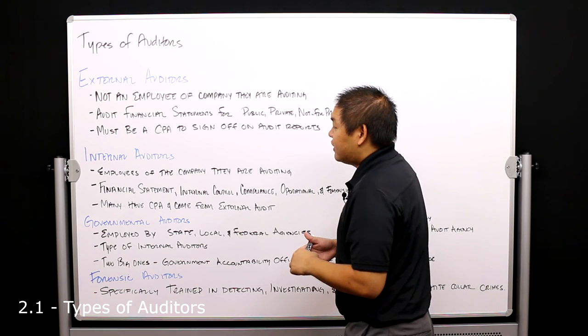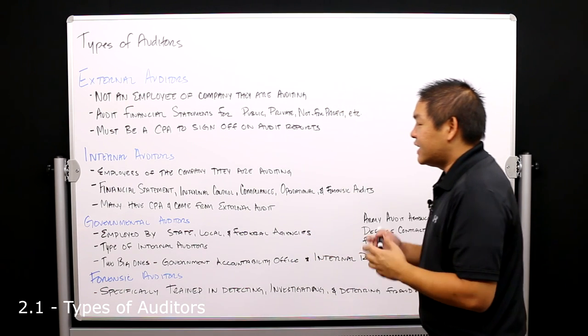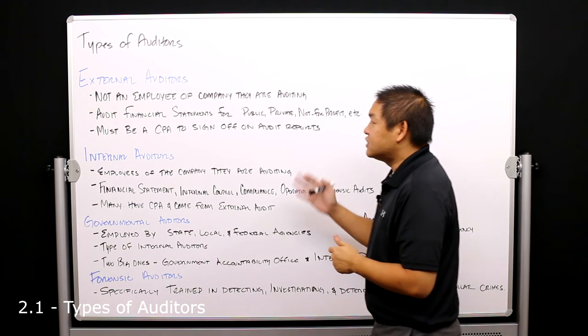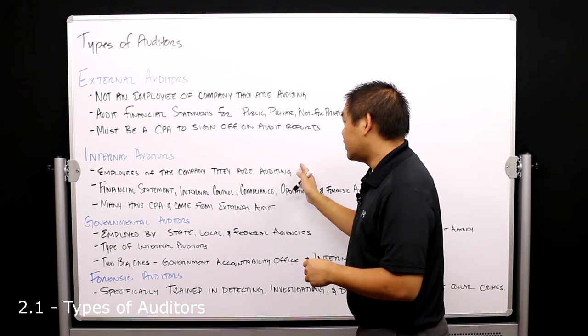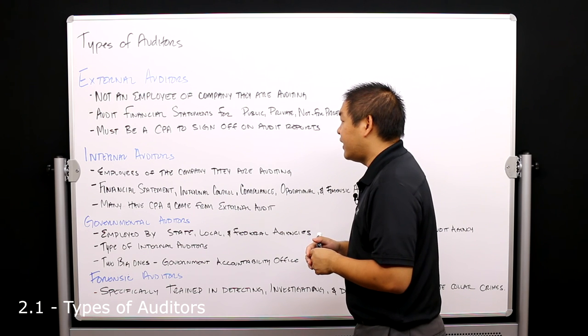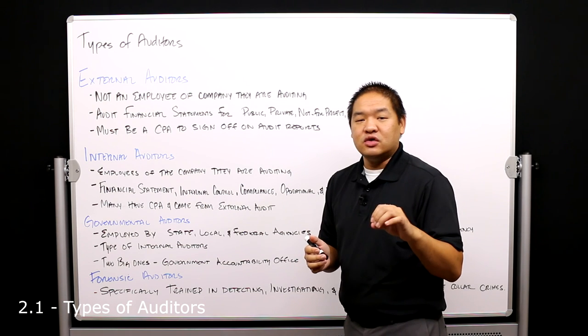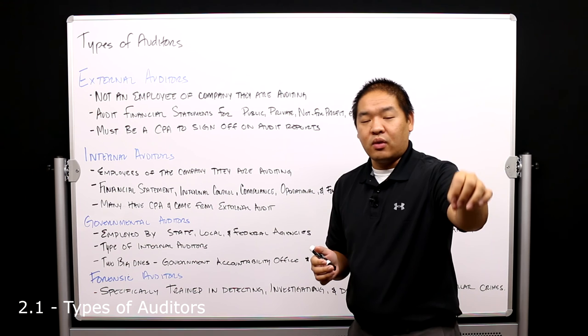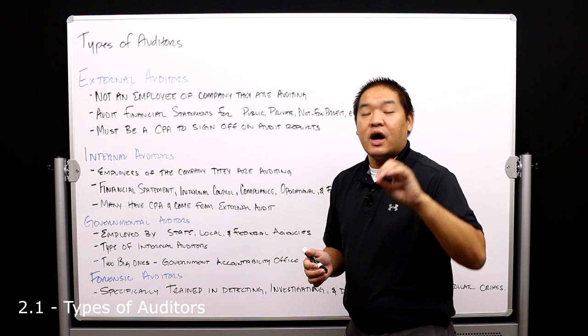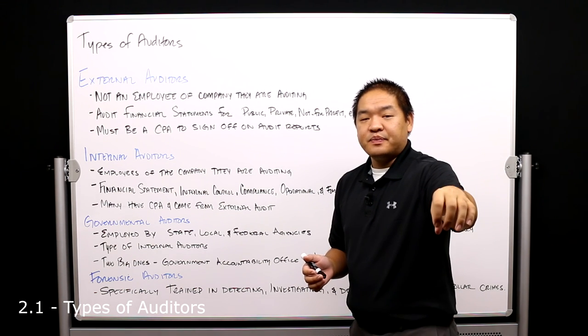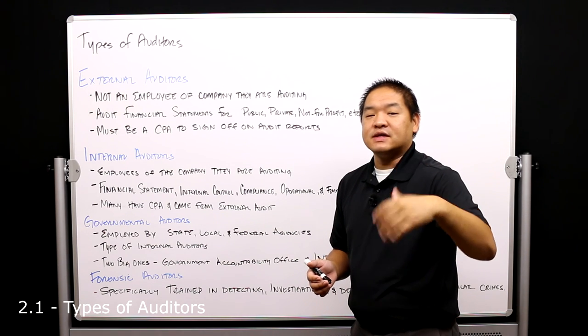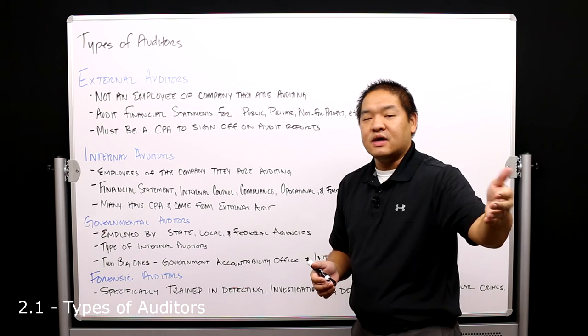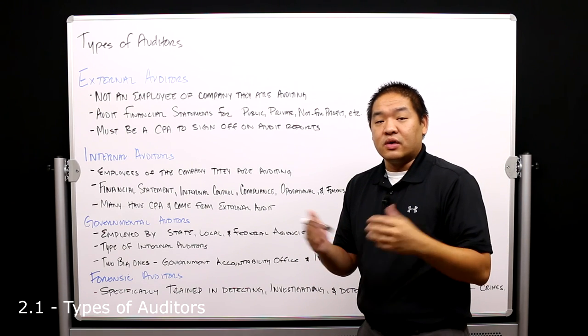The next type of auditor that you may encounter is what we call an internal auditor. Now internal auditors are just like external auditors except they work for the company, so they're employees of the company that they're auditing. They cannot issue an opinion on the audit reports or audited financial statements. However, they could sign off on saying that they believe that everything that they audited was okay.